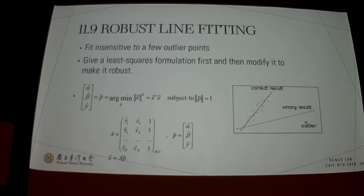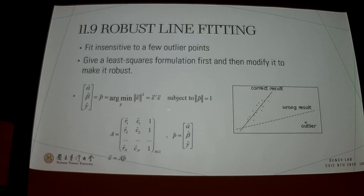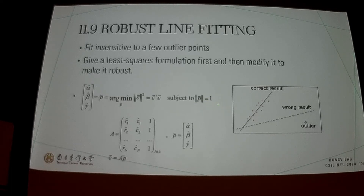For the parameters in robust line fitting, we have alpha_hat, beta_hat, and gamma_hat. We want to minimize subject to a constraint condition, and keep updating until we find the most optimum parameter based on this equation. If correctly solved it converges, but if there are outliers at different positions the result will be wrong.